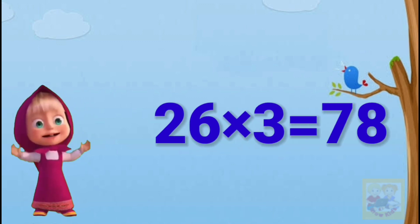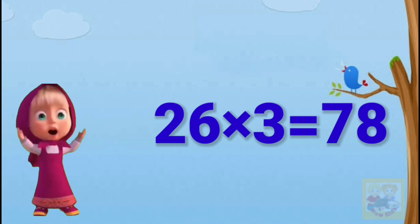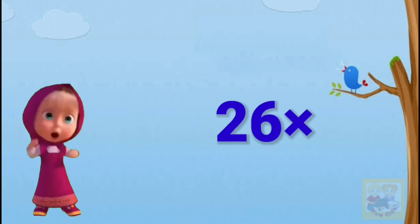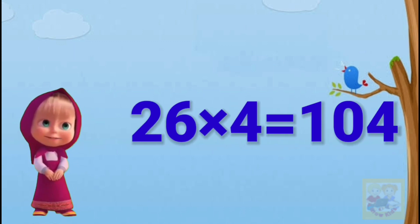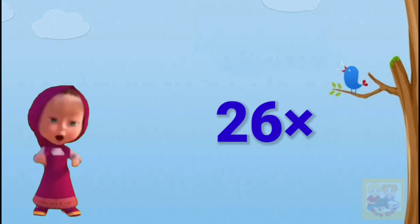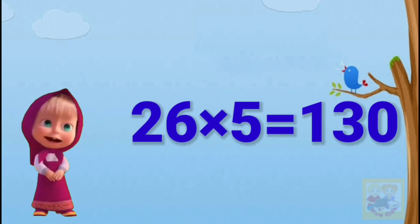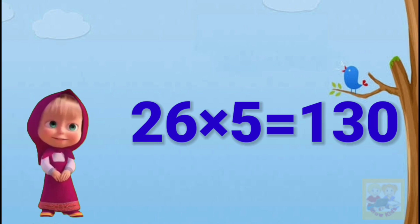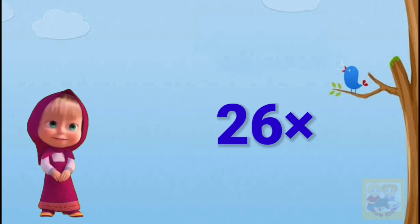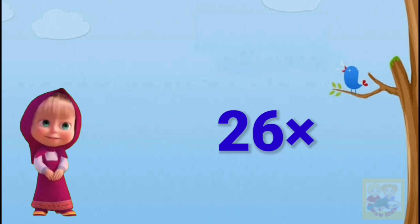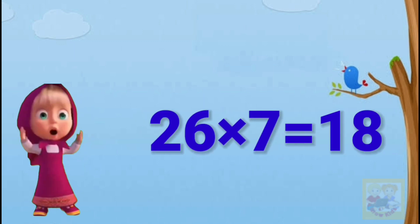Twenty-six threes are seventy-eight. Twenty-six fours are one hundred four. Twenty-six fives are one hundred thirty. Twenty-six sixes are one hundred fifty-six.